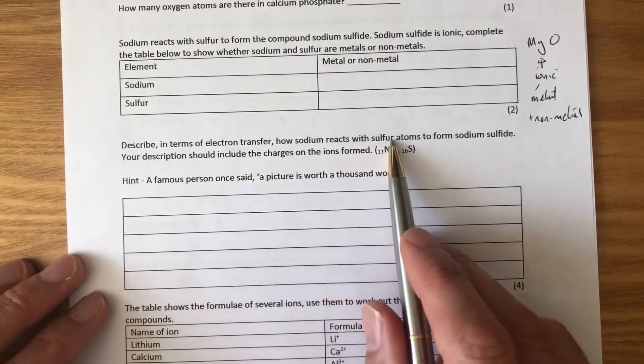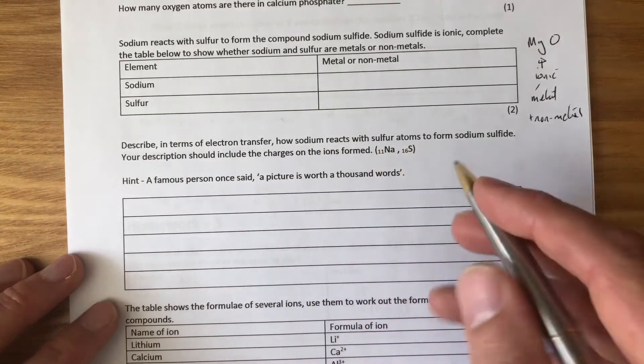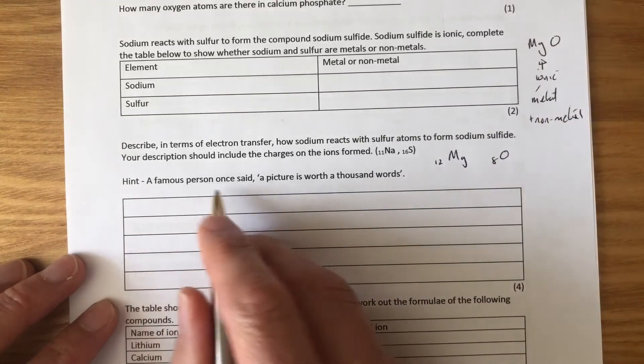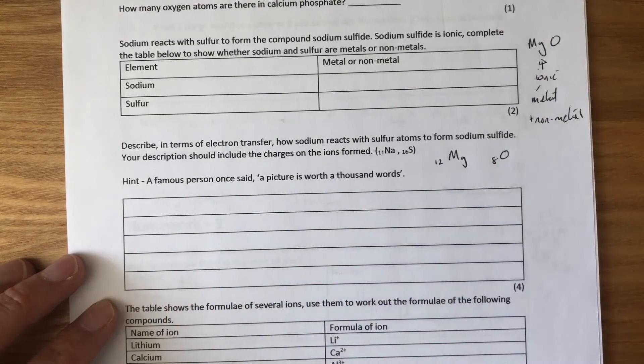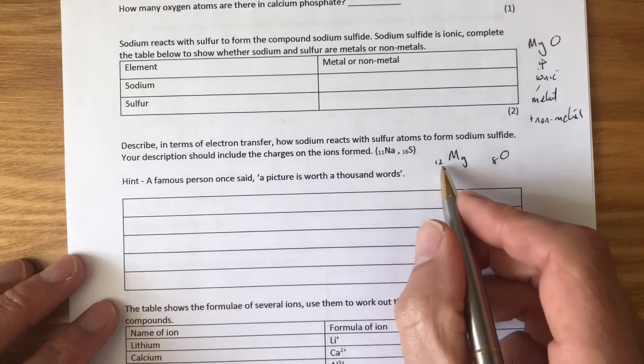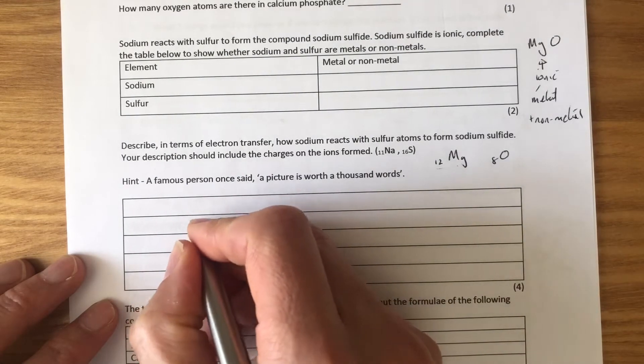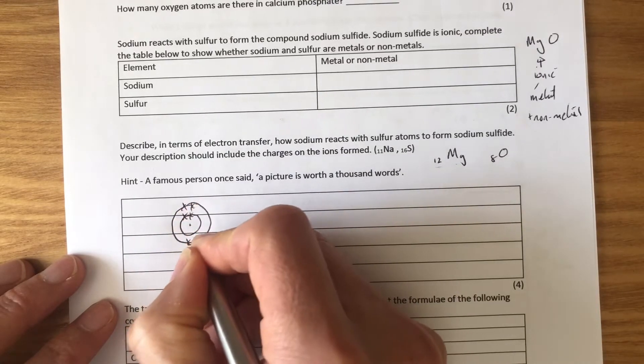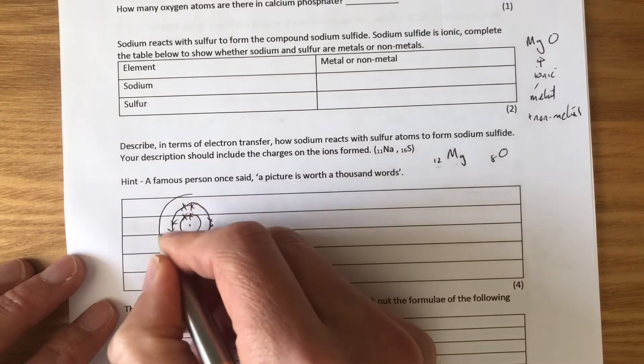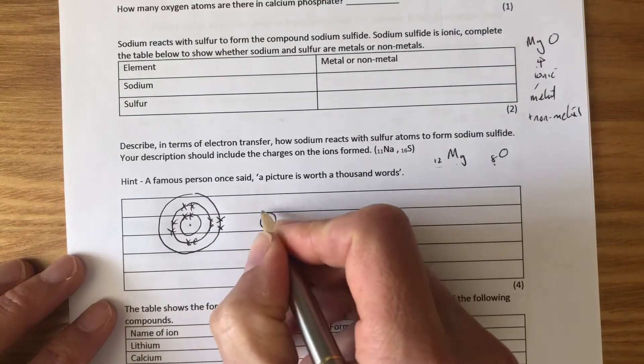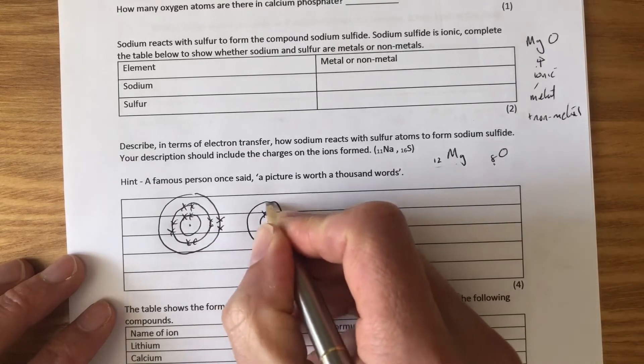Describe in terms of electron transfer how sodium reacts with sulfur atoms. Well, I'm not going to do sodium and sulfur, I'm going to do magnesium and oxygen. Magnesium's got an atomic number of 12, oxygen's got an atomic number of 8. A picture is worth a thousand words. In chemistry, we can do explanations and descriptions through diagrams, and that's often the best way. Labelled diagrams are even better. So, let's draw magnesium first. Magnesium's got two electrons on the first shell, eight electrons on the second shell, and two electrons on the third shell. Oxygen, atomic number of eight, therefore two electrons on the first shell, and six electrons on the second shell.